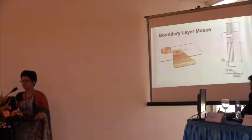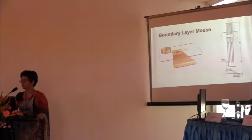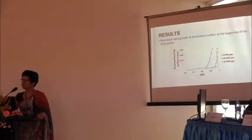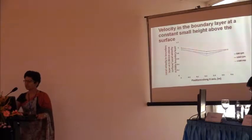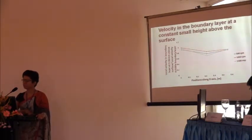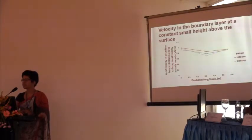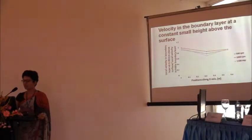This is an actual image of our boundary layer mouse mounted on a flat plate. In this experiment, we took the mouse off the flat plate and mounted it at different locations in the test section for the three different RPMs. This shows the boundary layer growth at the beginning of the test section for the three different RPMs. We also measured the velocity in the boundary layer at a constant small height of 0.06 millimeters above the surface throughout the test section length. Somewhere after the mid-section there is a drop in velocity, which shows that transition has occurred around that region.